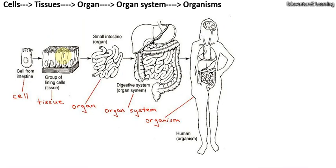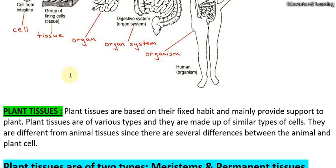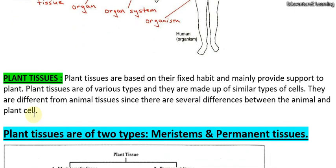So in this chapter we have to study about tissues. Tissues are of two types: plant tissues and animal tissues. We will study about both. What are plant tissues? What are animal tissues? In this video, we are going to discuss about plant tissues.